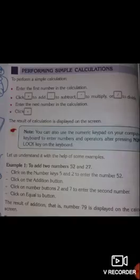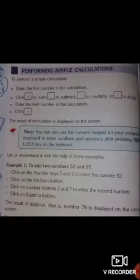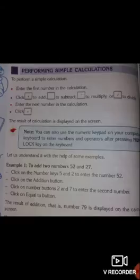Let's understand this with an example. Example number one: to add two numbers, 52 and 27. Click on the number keys 5 and 2 to enter 52, then click on the addition button, then click on 2 and 7 to enter 27, and finally click on the equals button. The result of the addition of 52 and 27 appears on the calculator screen, and that is 79.